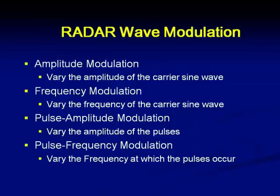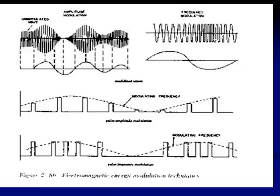Now let us see what types of modulation we employ. Normally we go with amplitude modulation of the sine wave. But in the case of CW radars, you need to go for frequency modulation to get the range information. FMCW radars are used to get the range; otherwise it is not possible. For pulse radars, normally we go with pulse amplitude modulation, wherein the amplitude of the pulses will be changed. In certain cases there is also use of pulse frequency modulation. The different types of modulation schemes result in different modulated waveforms as shown in the diagram.